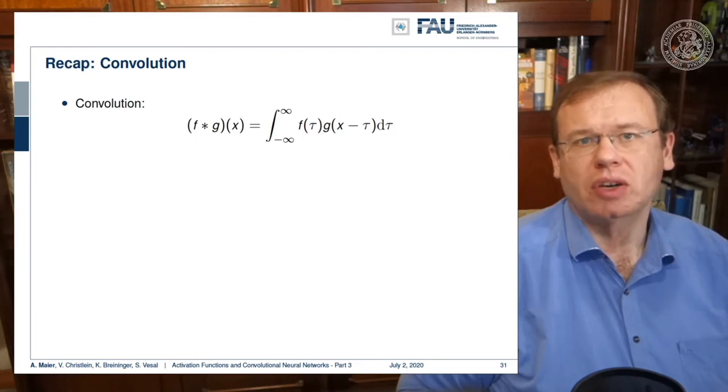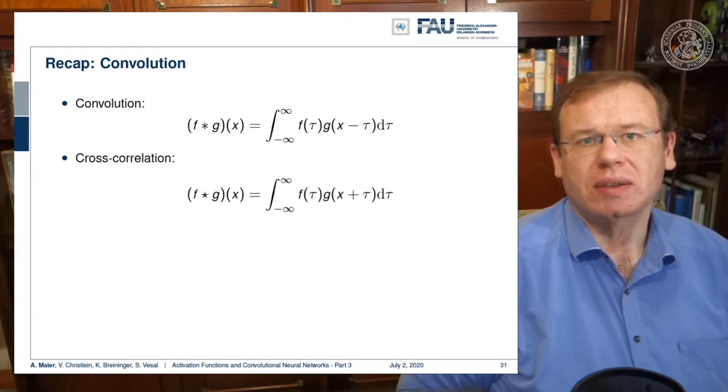Cross-correlation is an associated concept, and you can see that the only difference between cross-correlation and convolution is the sign of tau. In convolution you move in a negative direction, and in cross-correlation you move in a positive direction.